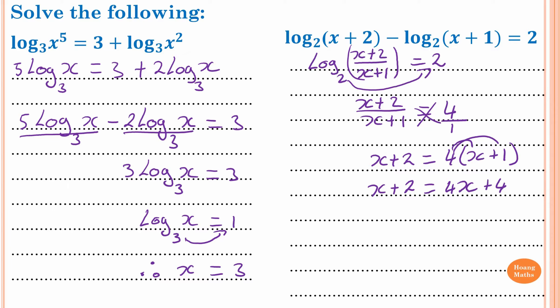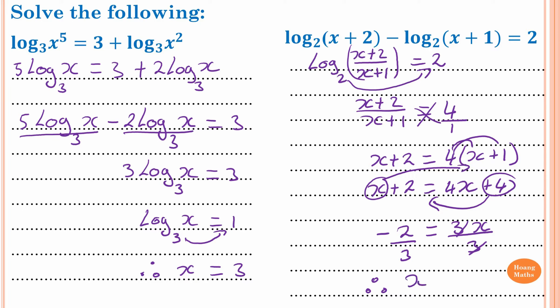So now I solve for x. I move the x to one side and the 4 to the other side. So x plus 2 is equal to 4x plus 4. So 4 becomes minus 4 and x moves to the right-hand side becoming negative x. So 2 minus 4 is minus 2, which equals 4x minus x, which is 3x. So I divide by 3 on both sides, therefore x is equal to minus 2 over 3.